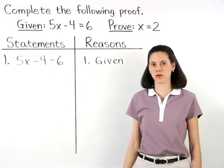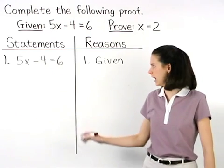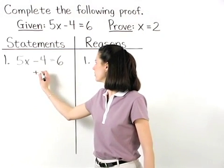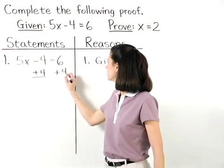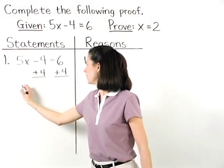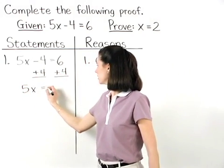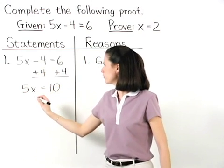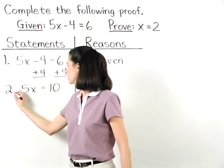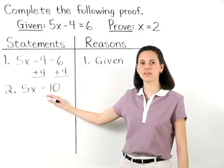Our first step in solving the equation is to add 4 to both sides to get 5x equals 10. So statement 2 is 5x equals 10.